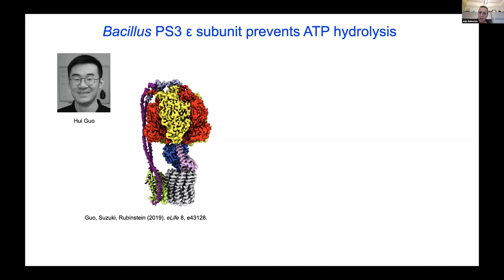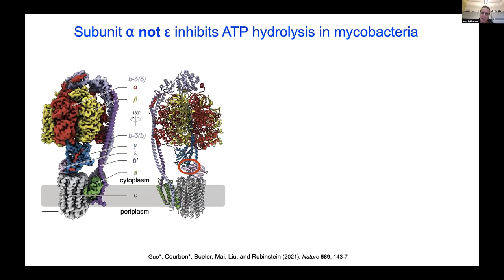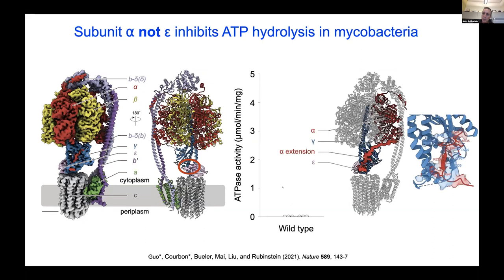In Bacillus PS3, a specific subunit extends up into the catalytic region to prevent ATP hydrolysis in the absence of proton-motive force — positioned so the rotor cannot turn in the hydrolysis direction, but can turn freely in the synthesis direction. The mycobacterial ATP synthase lacks that subunit extending into the catalytic region; it's in a down-facing conformation. Yet when we purify the mycobacterial ATP synthase, it has no ATP hydrolysis activity. Instead, we noticed a peculiar extension from the alpha subunits in the catalytic region that links to the central rotor, forming a hook-like latch that prevents the rotor from turning in the hydrolysis direction.